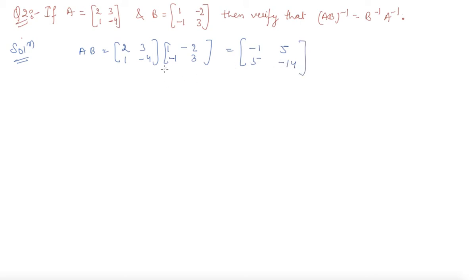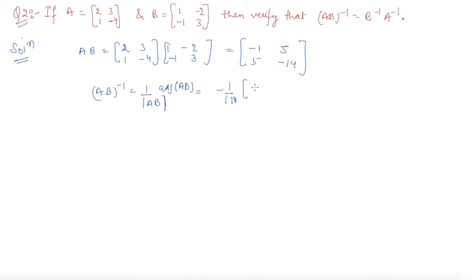As you can see, mod(AB) is not 0, so AB inverse also exists. AB inverse is 1 divided by mod(AB) times adjoint of AB. Mod(AB) is 14 minus 25, that is minus 11, so it is minus 1 by 11. The adjoint of AB is simply replacing the elements, and this comes out to be 14, 5 / 5, 1. So AB whole inverse is coming out with this result.